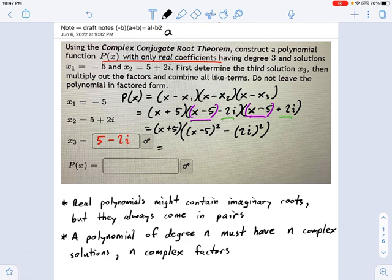So I'm going to say the following: this is still x plus 5 on the outside, and the inside of this thing becomes x minus 5 squared, which is x squared minus 10x plus 25. And then I have that minus 2i squared thing, which is minus 4i squared, which, if you remember what i squared is, i squared is negative 1, so this becomes plus 4.